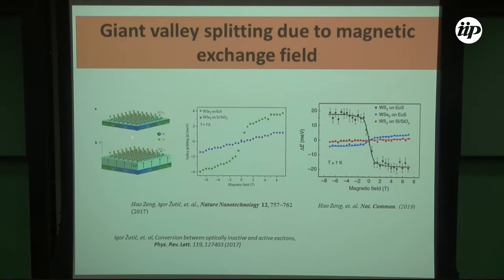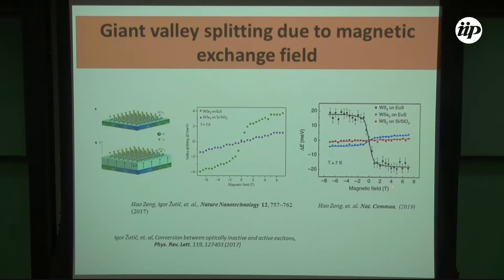More recently, the same group published results showing that for different W-based TMD materials you get different valley polarization magnitudes. Especially for tungsten disulfide, you only need a relatively small magnetic field — about 7 teslas compared to the 50 teslas needed otherwise — and you can achieve more than 40 meV valley splitting. This experimental data motivated us to develop new theoretical work.